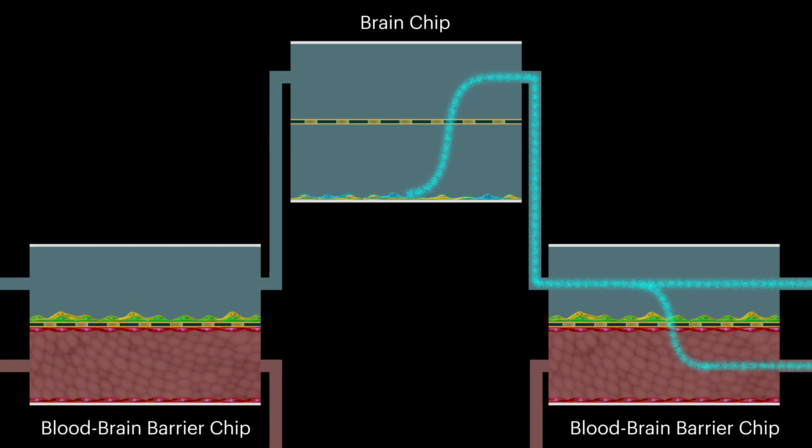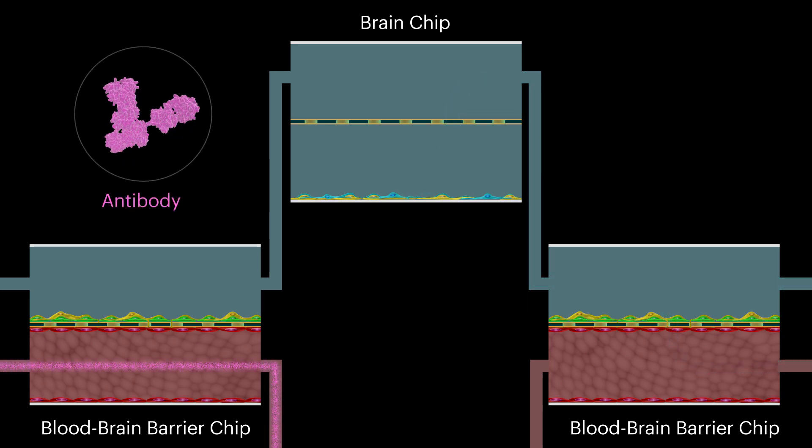At the same time, small molecules released from neurons flow out through the same perivascular channel and into the second blood-brain barrier chip, where they pass through the endothelial cells and back into the vascular channel.